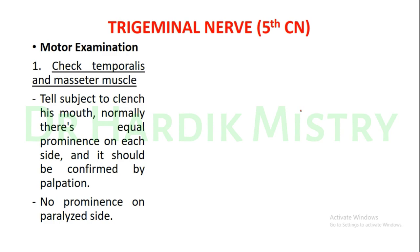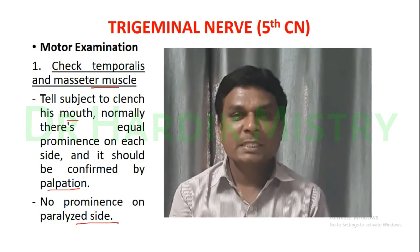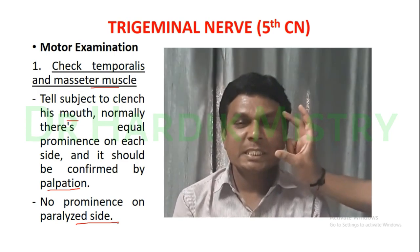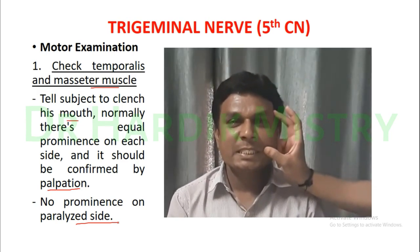For the motor system examination of the trigeminal nerve, first we check the temporalis and masseter muscles. Tell the subject to clench his mouth — normally there is equal prominence on each side, which should be confirmed by palpation. Meanwhile, put your fingers over the angles of the mouth to find out whether the fold is present or not. No prominence on the paralyzed side indicates the muscle is paralyzed.